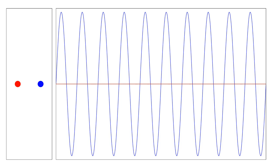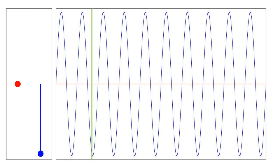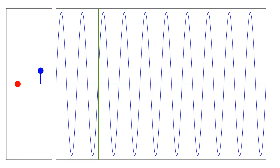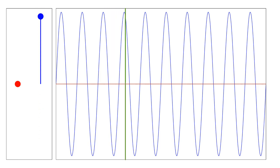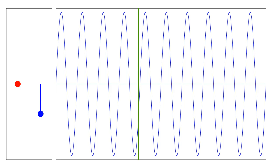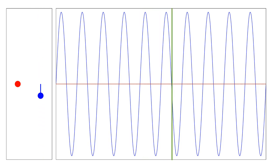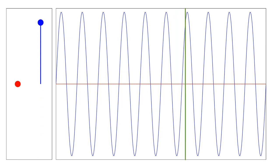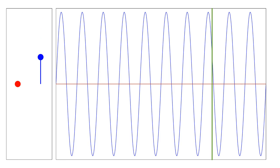Each mass independently satisfies the harmonic oscillator differential equation: x double dot plus omega squared x equals zero. If we give the blue mass an initial momentum, it oscillates sinusoidally. Here the blue line represents the stretched spring attached to the blue mass. Since there is no interaction mechanism between the masses, the red mass remains at rest, for this, what we will call the unperturbed problem.